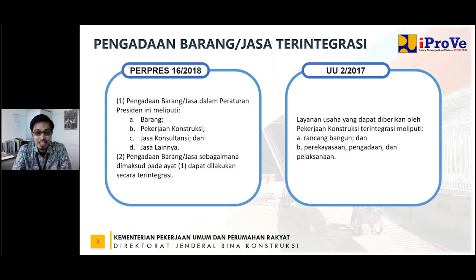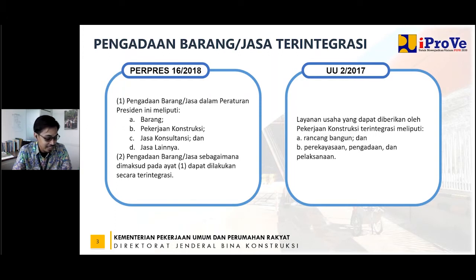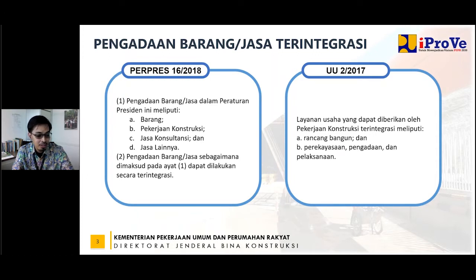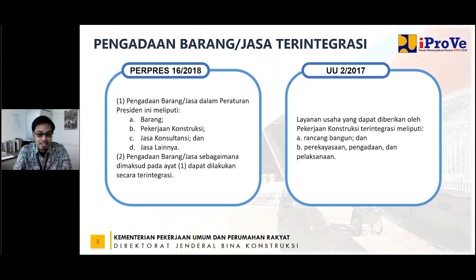Sebelumnya saya perkenalkan, nama saya Fani Duha. Panggilannya Fani, biasanya dipanggil Mbak Fani. Jabatan saya saat ini adalah sebagai kepala seksi standar dan pedoman di subdit sistem penyelenggaraan, salah satu subdit di bawah Direktur Pak Putut Maharyudi di Direktorat Bina Penyelenggaraan Jasa Konstruksi. Saya mulai bertugas di seksi ini mulai Maret 2017. Waktu itu kami mulai menyusun Permen PU Nomor 12 Tahun 2017 yang kemudian digantikan dengan Permen 1 Tahun 2020.